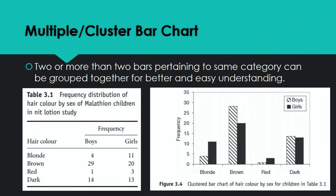Next is the multiple bar chart — also called a multiple poster bar chart in some places. In this chart, two or more bars pertaining to the same category are grouped together for better and easy understanding. Here I have written data for boys and girls with different hair colors as a table, and alongside it the corresponding plot. If you present this in a table, it looks one way; in a graph, it looks more informative.